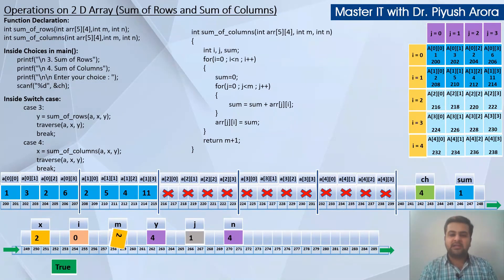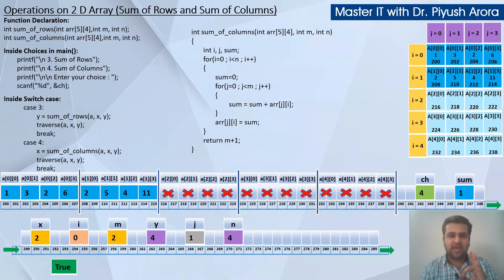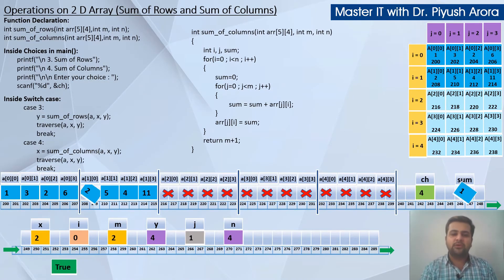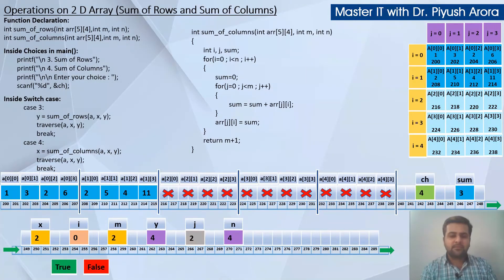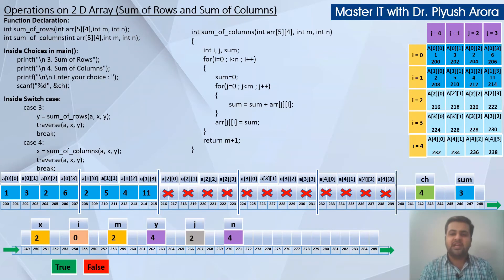j increments (j=1), condition 1 < 2 (M=2) is true. sum = sum + arr[j][i] = sum + arr[1][0]. Here i is still 0 but j is 1, meaning we take the second row's first element — this gives 1 + 2 = 3. j increments (j=2), condition 2 < 2 is false, so the internal loop terminates. arr[j][i] with j=2 and i=0 stores the sum: arr[2][0] = 3. You can see this in the logical and physical representations.